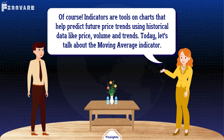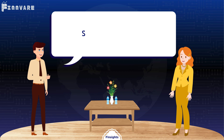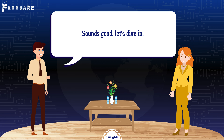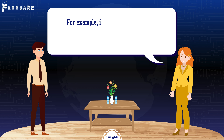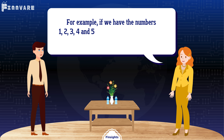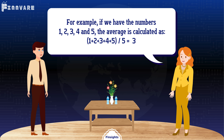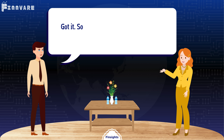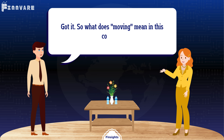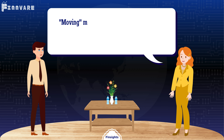Today let's talk about the moving average indicator. Sounds good, let's dive in. Let's start with understanding the term average. For example, if we have the numbers one, two, three, four, and five, the average is calculated as the sum of the five numbers divided by five.